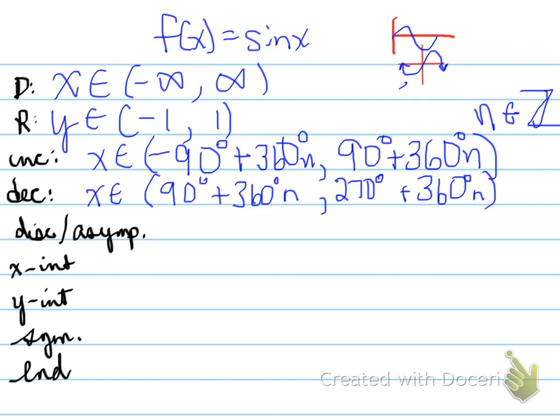There are no points of discontinuity. X-intercepts repeat themselves every 180 degrees. It's 180 degrees n.